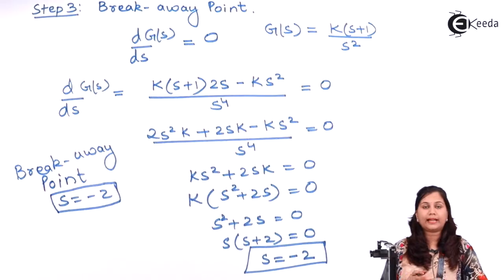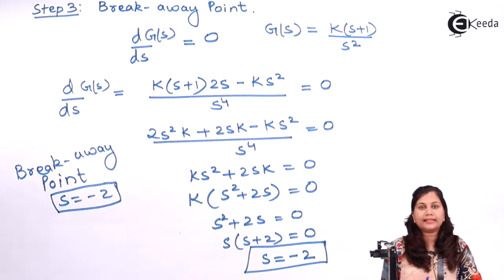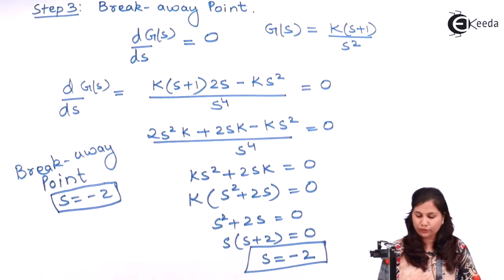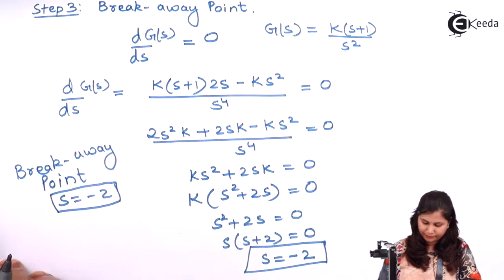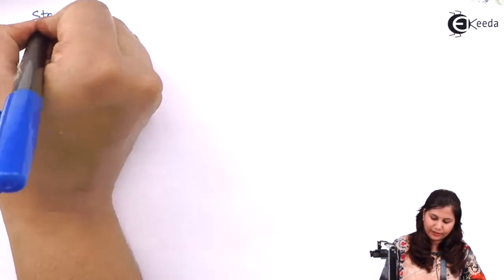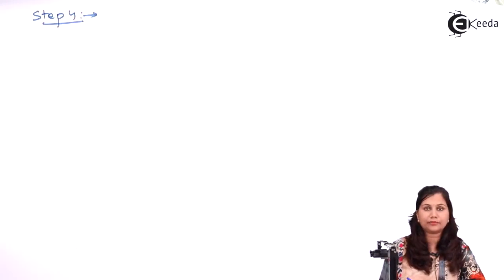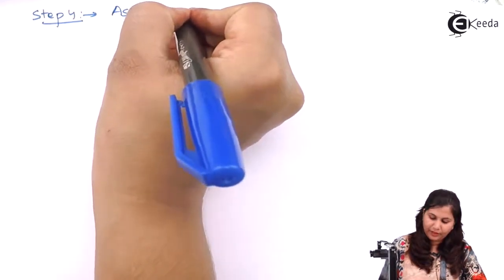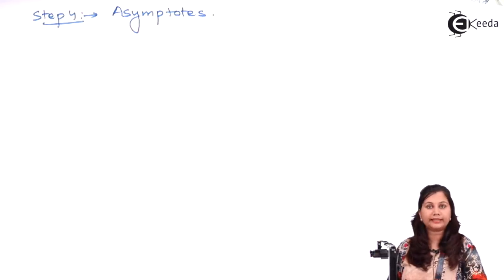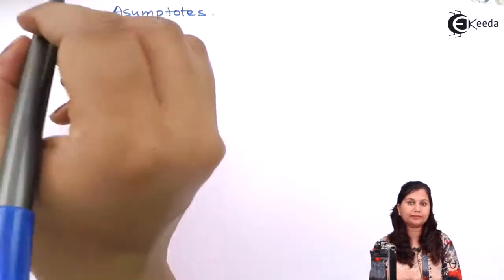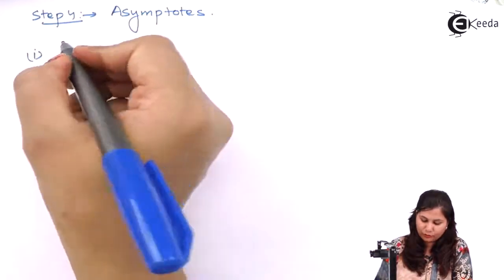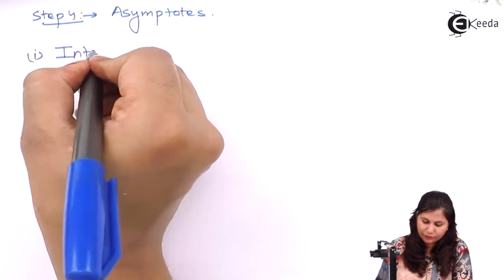The two branches of the root locus coincide at s = −2. Now step four is to find out the asymptotes. First we will find out the intersection point of the asymptotes with the real axis.